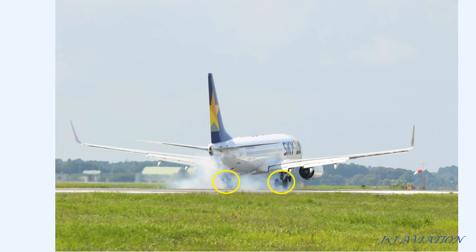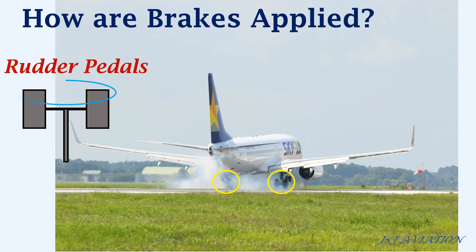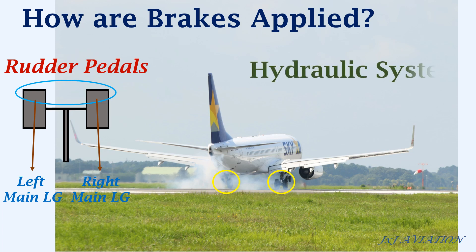Now let's see how the brakes are applied on the aircraft. Manual brake application is via the rudder pedals. More specifically, brakes are applied when the top section of the rudder pedal is pressed. The left pedal is connected to the brakes on the left main landing gear and the right pedal is connected to the brakes on the right main landing gear. Normally the hydraulic system on the aircraft provides hydraulic pressure for the activation of the brakes.